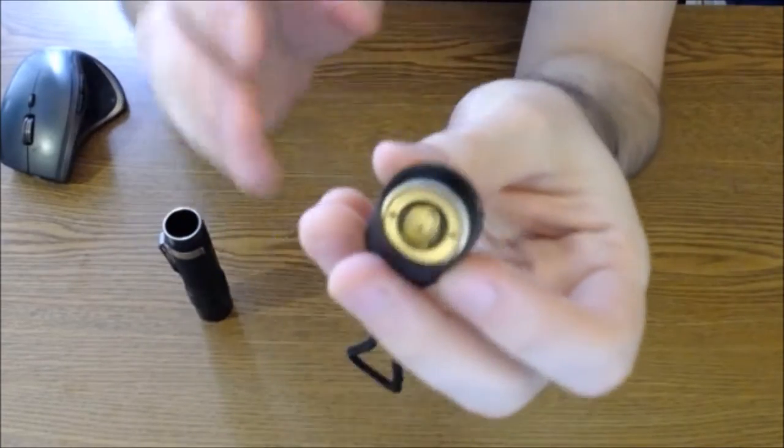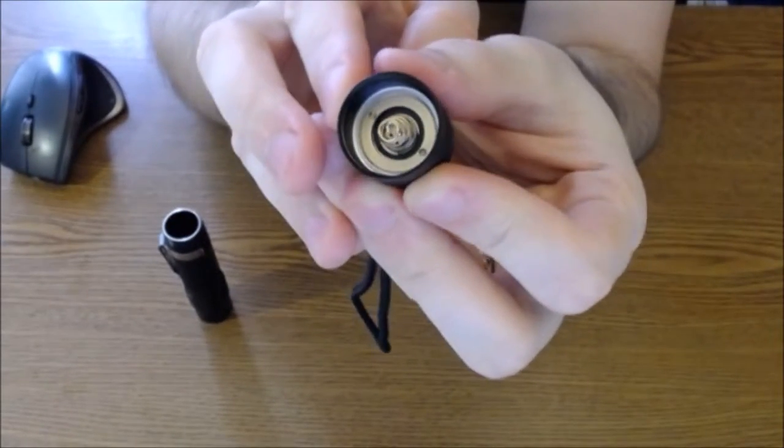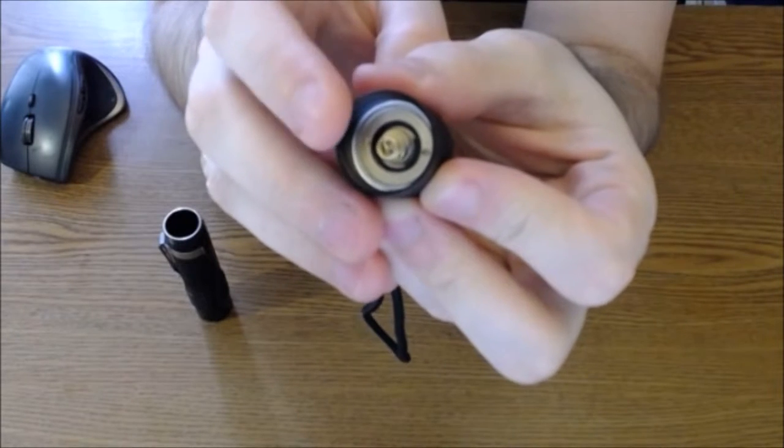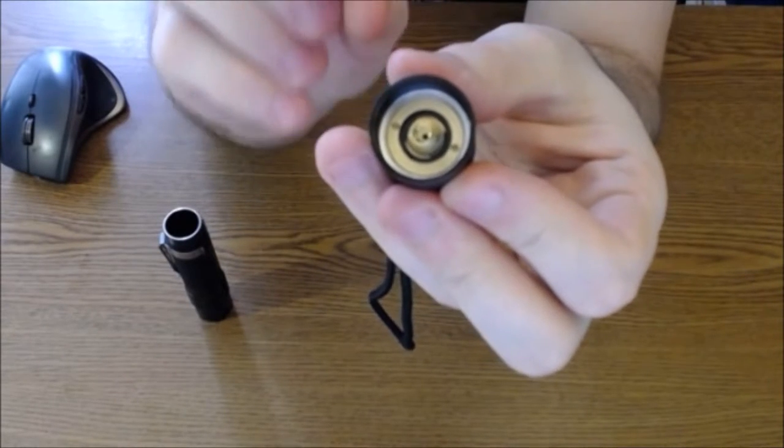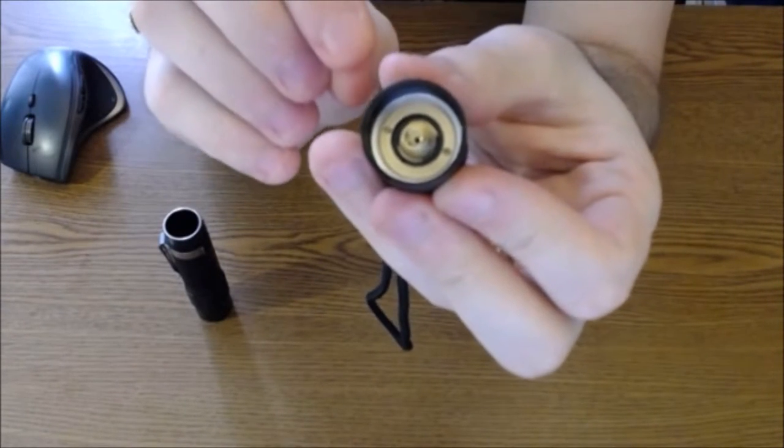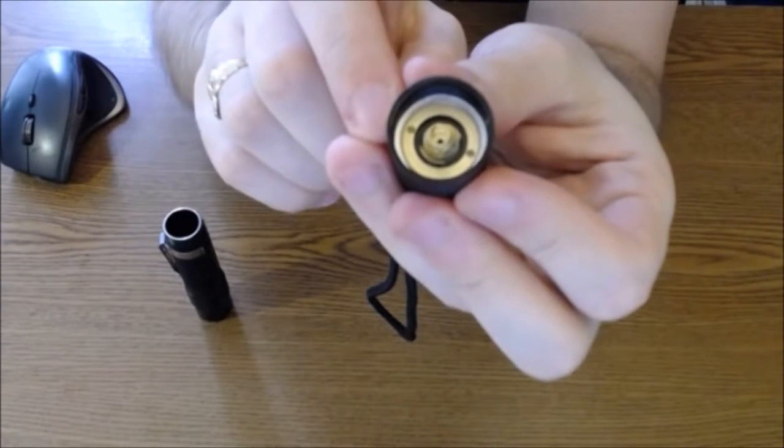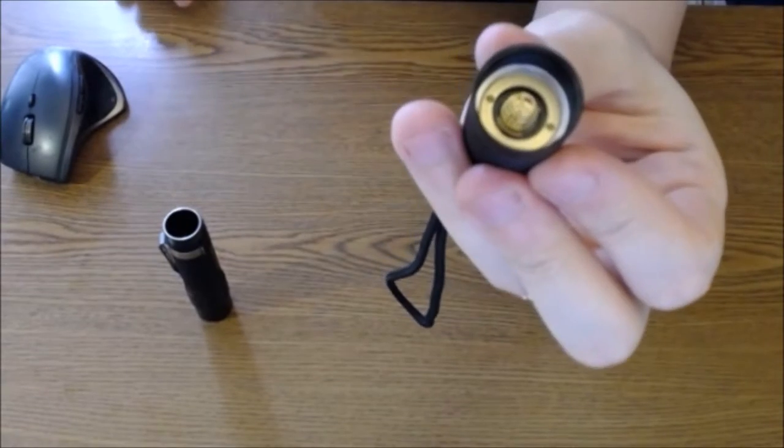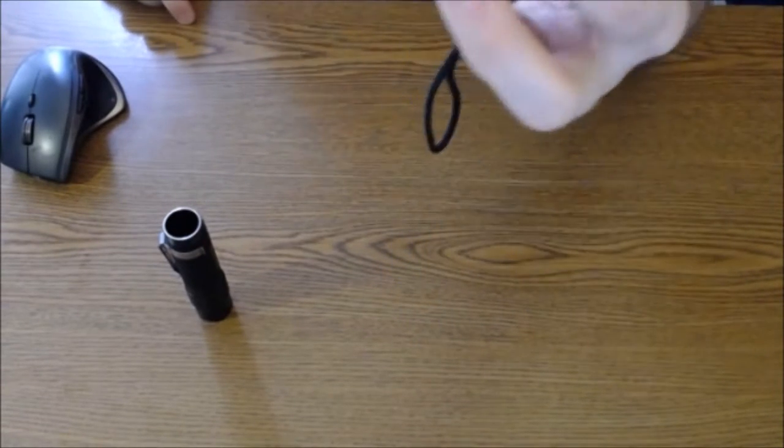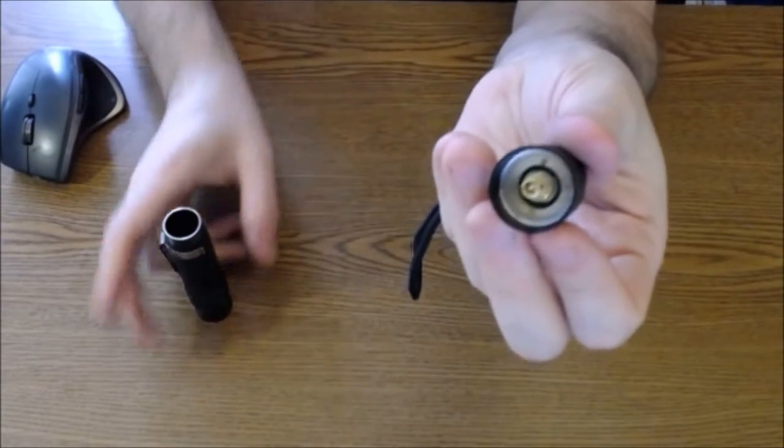The end cap is the type where you can open up. You can see you can get at that disc in there. You can open up so you can do a tail mod, run a piece of wire, get a much better contact point out of the tail if you want, or rebuild it, put a different switch in there, whatever you like.